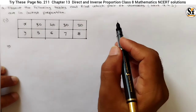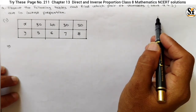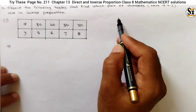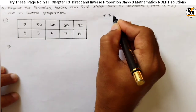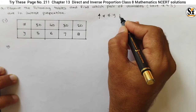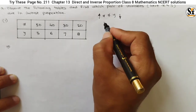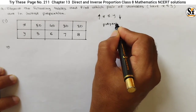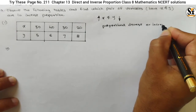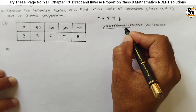We know that in direct proportion, if x increases, y also increases in proportion. But in inverse proportion, the two quantities x and y are said to be in inverse proportion if an increase in x causes a proportional decrease in y, and vice versa. The word 'proportional' is very important here — if one increases, the other decreases, but in proportion.